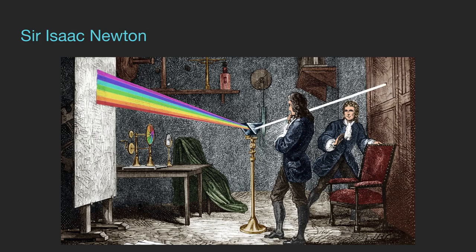He was able to angle his prism to isolate colors. He figured out that if you combine blue and green light together you get cyan, and if you combine green and red light together you get yellow. So he's isolating colors out and figuring out how colors mix and how they isolate.